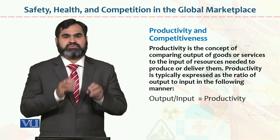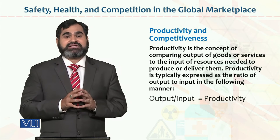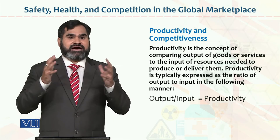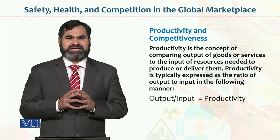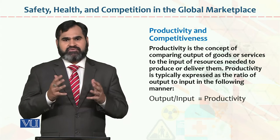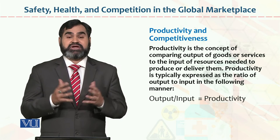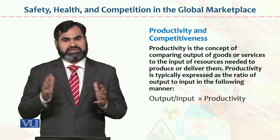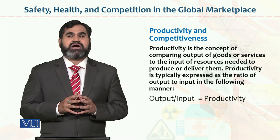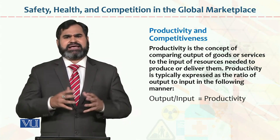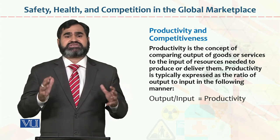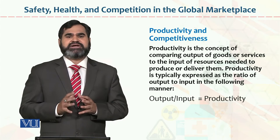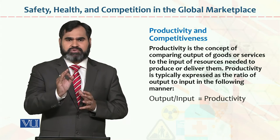Input is the basic ingredients which you put into the production process. The result of input is known as output. The desired level of output is known as outcome. For example, 45 students took admission in a university — that is input. After a 4-year degree program, 35 of them graduated — that is output. Among those 35, only 10 students can genuinely justify their degree — that is the outcome. This is the difference between input, output, and outcome.